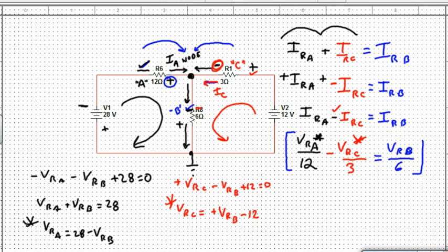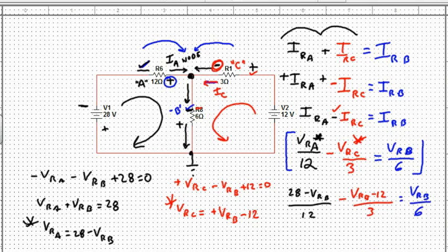I'm going to put this into right here, and I'm going to put this right to there. Now when I rewrite this equation, I get 28 minus V_RB divided by 12. Then I subtract V_RB minus 12 divided by 3, and I set that equal to V_RB divided by 6. There I have one equation with one unknown. You can solve this from a number of ways. I'll show you how to do that next.